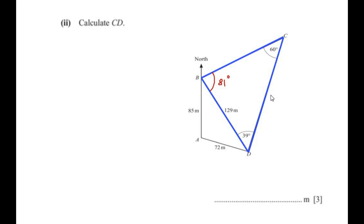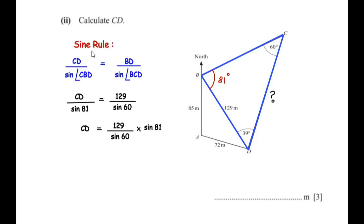Since we need to find the missing side CD, we use the sine rule. We have the angle opposite to CD and we have side BD = 129 with its opposite angle known. So: CD / sin(CBD) = BD / sin(BCD), which gives CD / sin 81° = 129 / sin 60°.